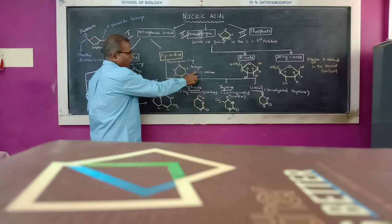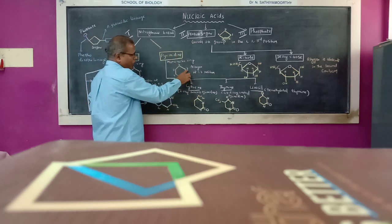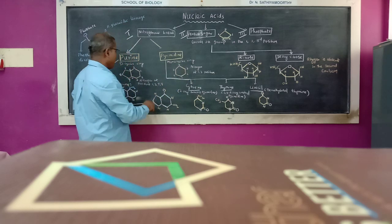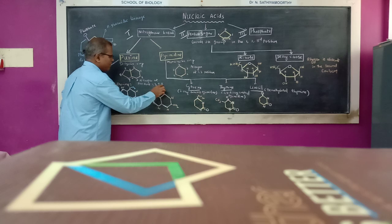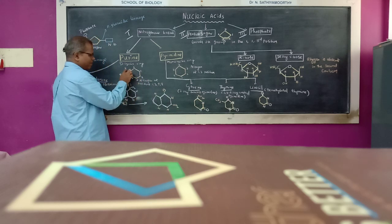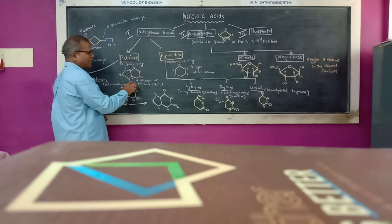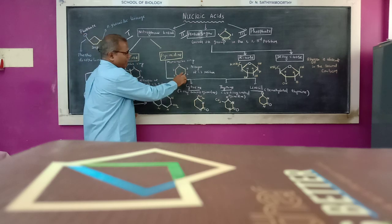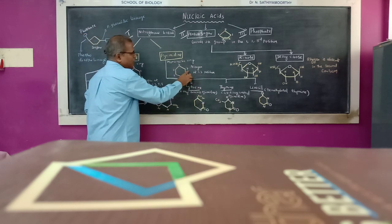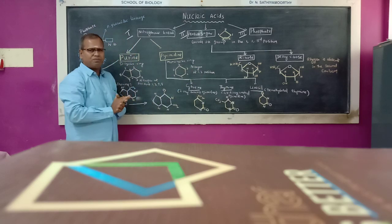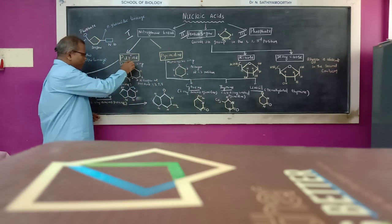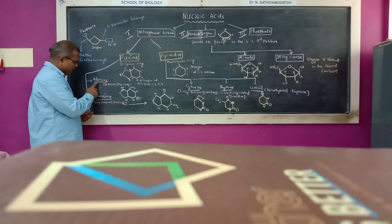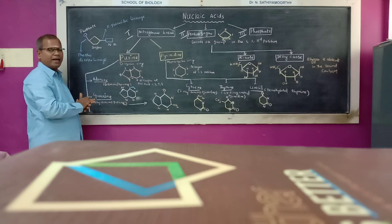In the pyrimidine base, the first position has nitrogen. In the purine base, hydrogen groups are at positions 1, 3, 7, and 9. Two types of purine bases are reported: adenine and guanine.